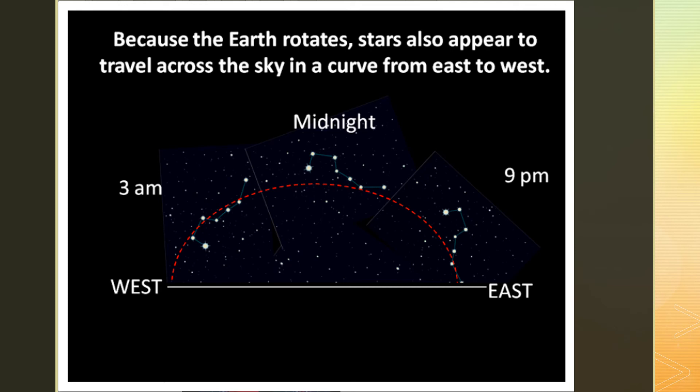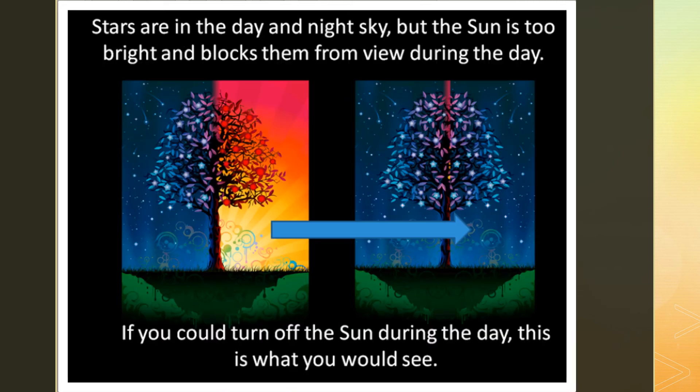Humans make patterns out of the points of light, like dot-to-dot pictures, which seem to slowly move across the sky in big curves, just like the sun. This apparent movement of stars is also caused by the Earth's rotation. The sun and stars do not really move across the sky. Stars are actually present in the daytime sky too. However, the sun is so bright that these dim points of light cannot be seen.